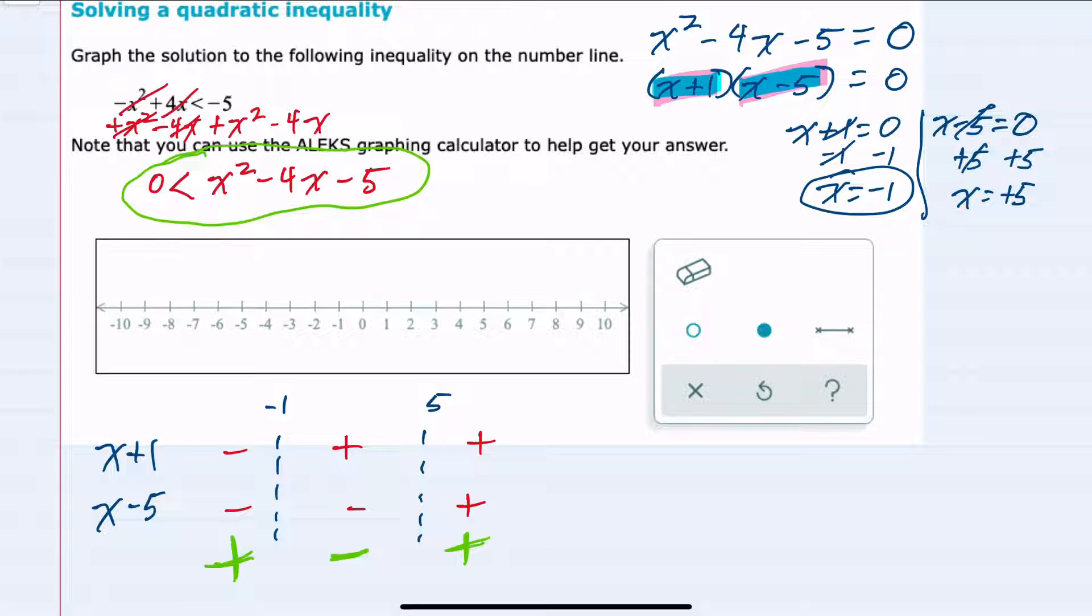For this inequality I'm looking for where my quadratic is greater than 0, so I'm looking for where it is positive. It would be positive to the left of negative 1 or to the right of positive 5. And then at these points, since it is just less than 0 and not equal to 0, I would graph these points as the empty circle.